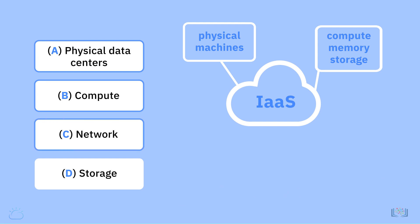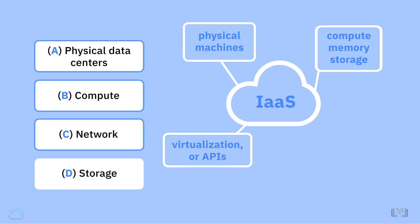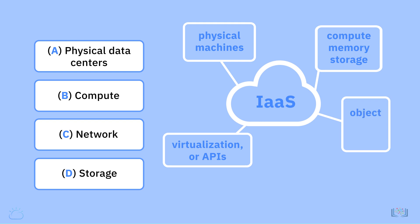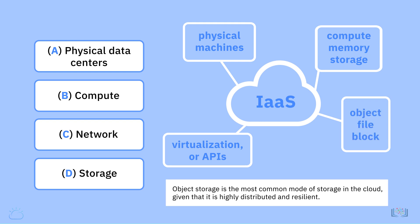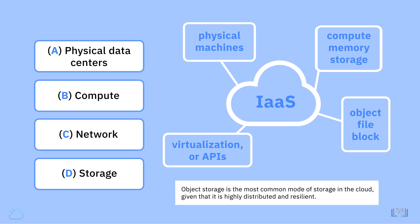Network: Users get access to networking resources on the cloud through virtualization or programmatically through APIs. Storage: There are three types of cloud data storage — object, file, and block storage. Object storage is the most common mode of storage in the cloud, given that it is highly distributed and resilient.